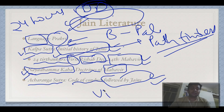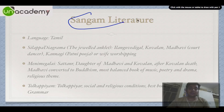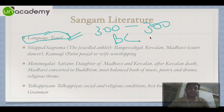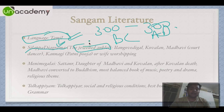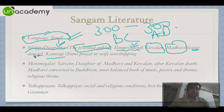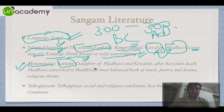Sangam literature was asked in the 2013 exam, so pay close attention. The language is Tamil and it spans from 300 BC to 300 AD. The first book is Silappadikaram, also called 'The Jeweled Anklet', written by Ilango Adigal. The main hero is Kovalan, whose wife is Kannagi. Kovalan fell in love with Madhavi, a court dancer. Kannagi took revenge for Kovalan's killing, which is why 'Patni Puja' — the worshipping of the wife — is still prevalent and Kannagi is worshipped.